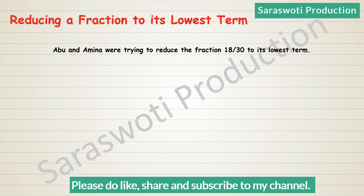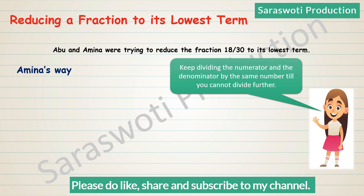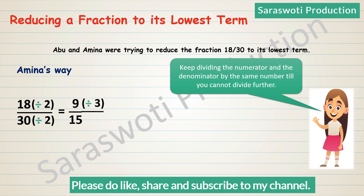A fraction can be reduced to its lowest form by the following methods. Abu and Amina were trying to reduce the fraction 18/30 to its lowest term. Amina's way: keep dividing the numerator and the denominator by the same number until you cannot divide further. So 18/30 → 18÷2 over 30÷2 equals 9/15, then 9÷3 over 15÷3 equals 3/5. Therefore, 3/5 is the lowest term of the fraction.